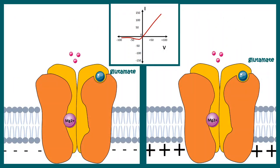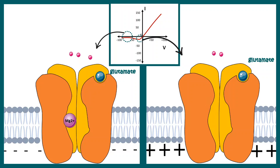Let's understand this IV plot using an analogy. In the part of the IV plot at negative potentials, the magnesium block is still present, which is why cations cannot get in. In the highlighted part of the curve at more positive potentials, the magnesium block is repelled, and that is why there is influx of cations through the NMDA receptor.